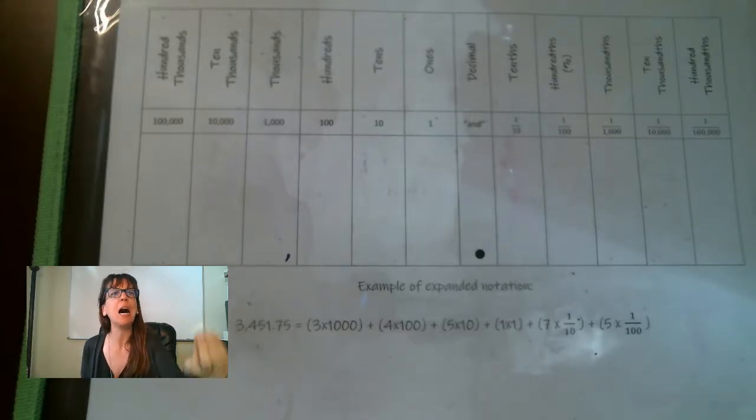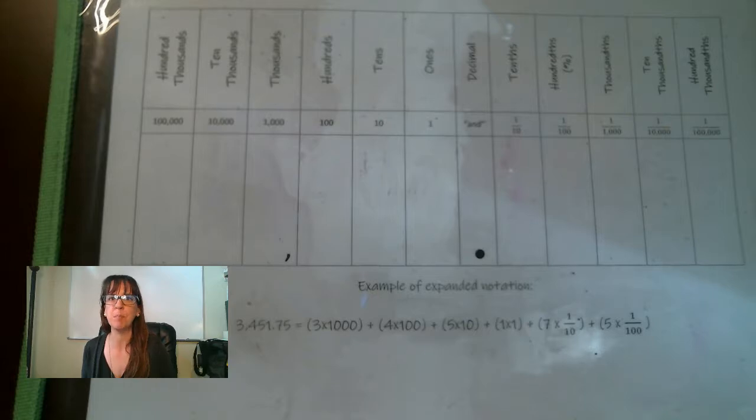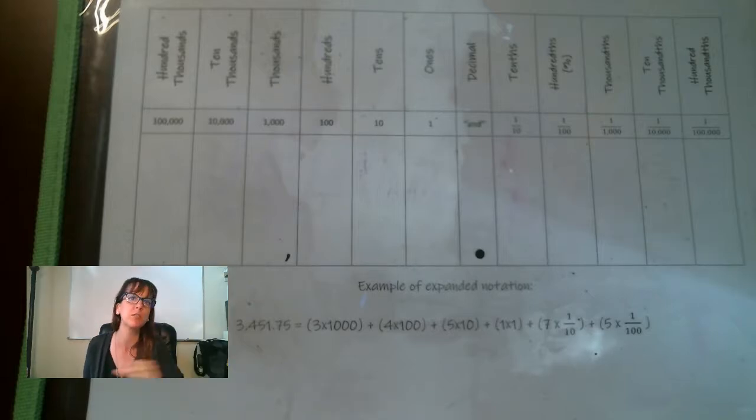Integers are the opposite of those counting numbers. So 1, negative 1, 2, negative 2. So integers include all of our whole numbers, zero, 1, 2, 3, 4, 5, all the way up. And then integers are the opposite of those.